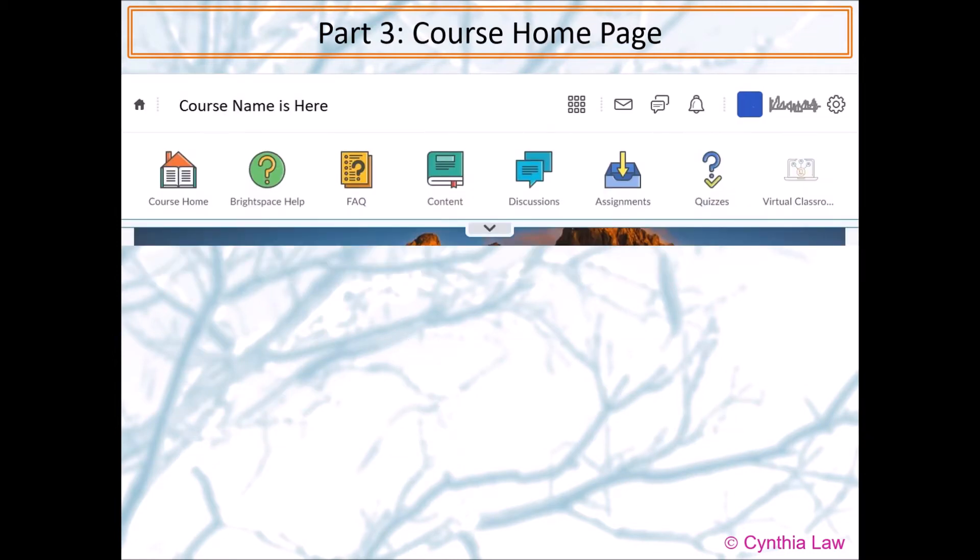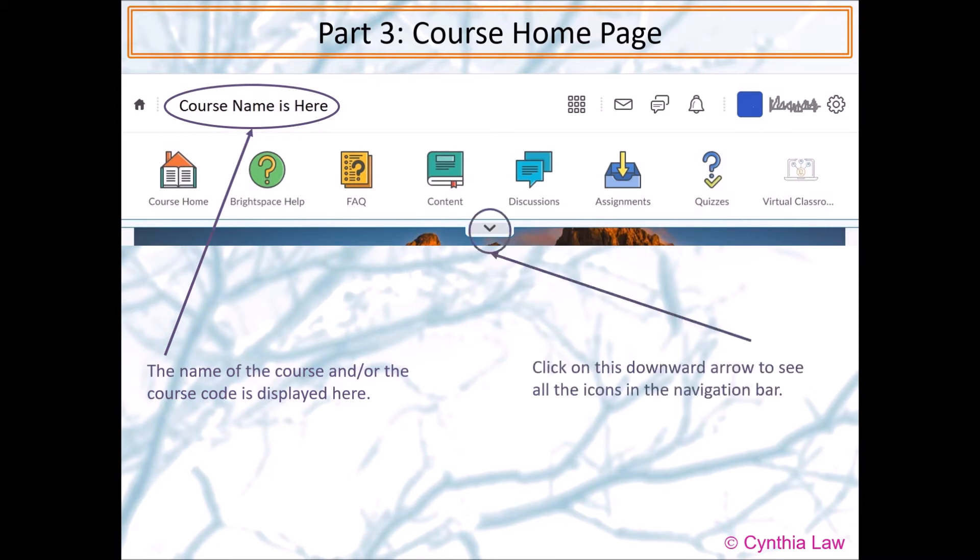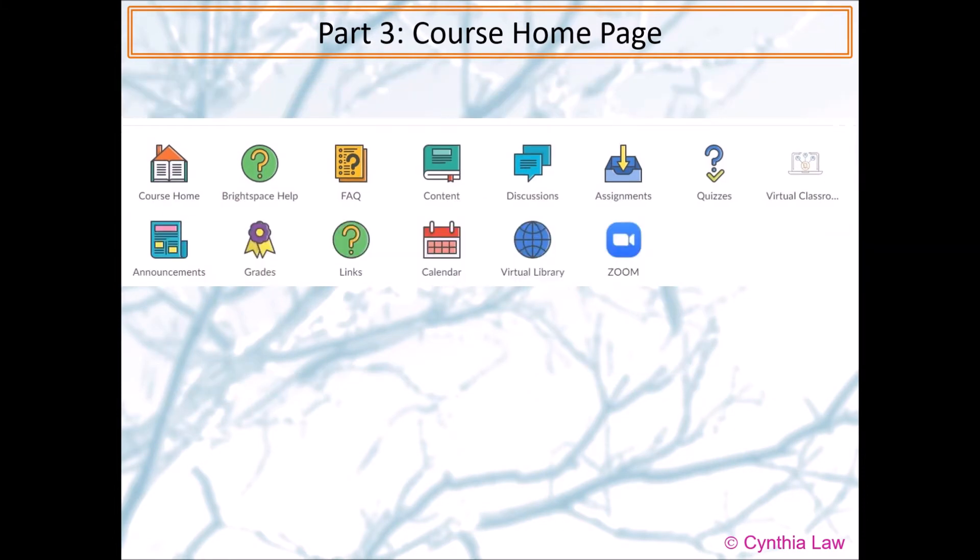Once you're in the course, you'll see the course name and course code displayed at the top. If you click on the arrow, then you can see all the icons in the navigation bar. Let's talk about these icons.